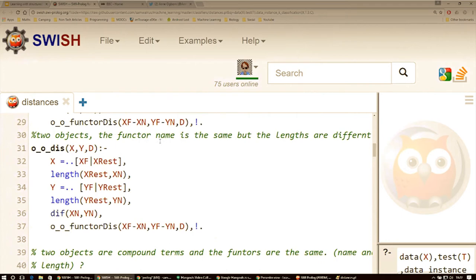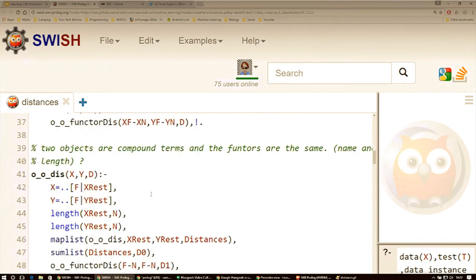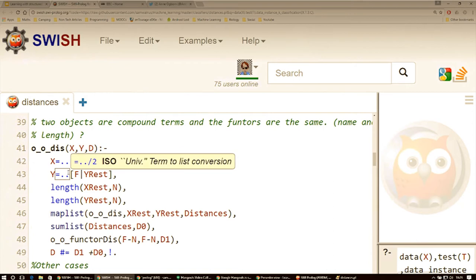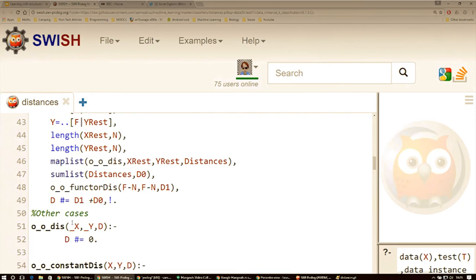And two objects with compound terms and the functors are the same, then we're going to use this one. And this is the recursive one where we're going to be using map list and recursing back in. And that's allowing us to recurse through the term and build up the distance. Finally, any other cases that we haven't called, we're going to say the distance is zero.